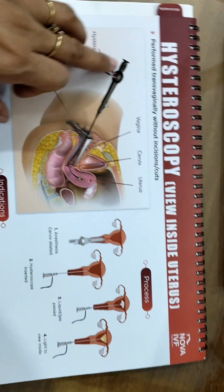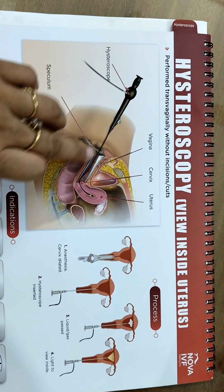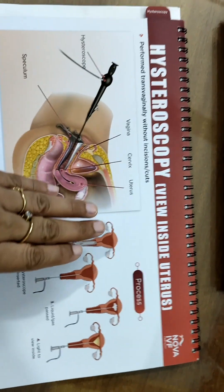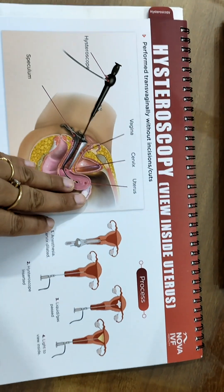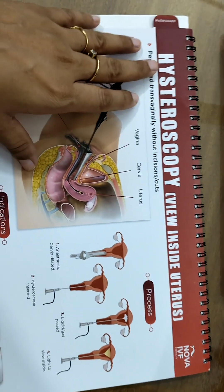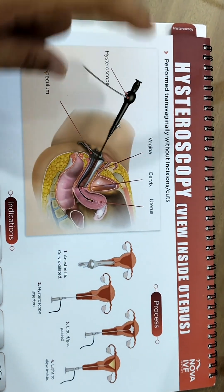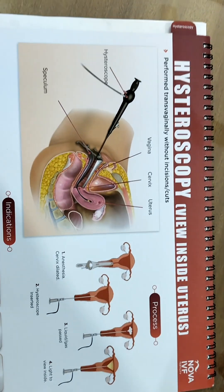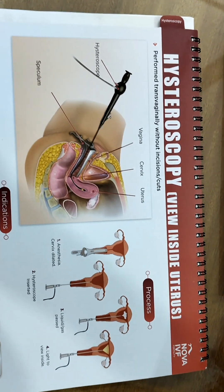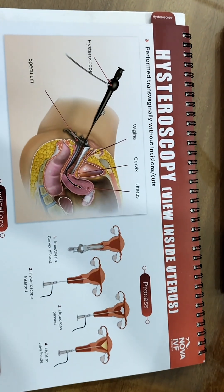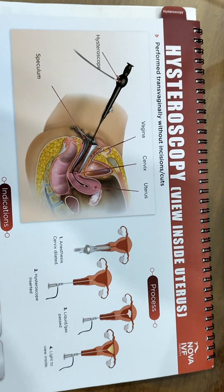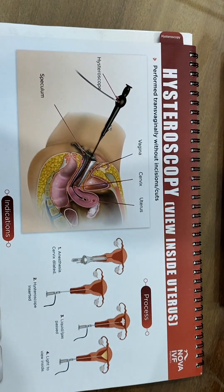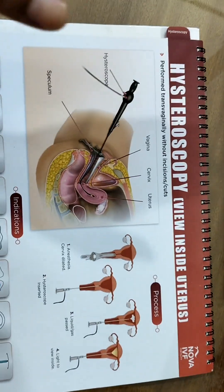It is performed always through the transvaginal procedure, that is through the vagina. There is no incision or cut on the surface of the abdomen. Hysteroscopy can be of two types: diagnostic and therapeutic. Diagnostic means just to put the camera and see inside the uterus, but therapeutic means we are also doing some kind of procedure inside the uterus.